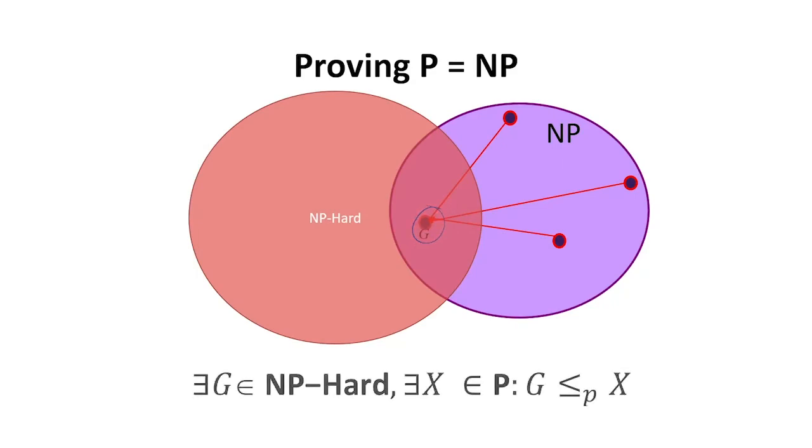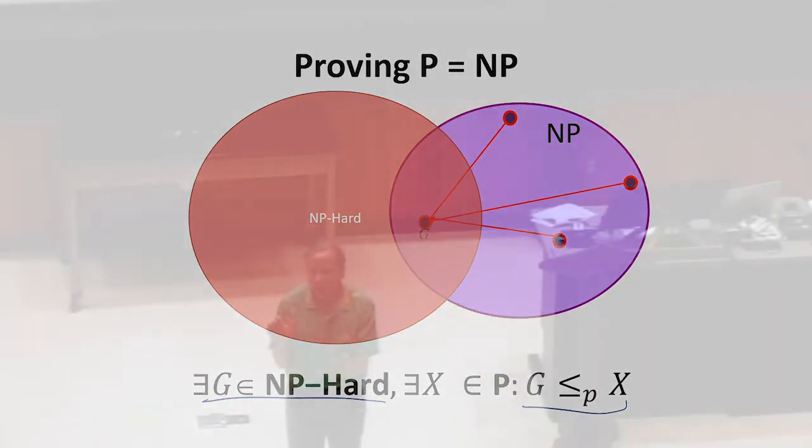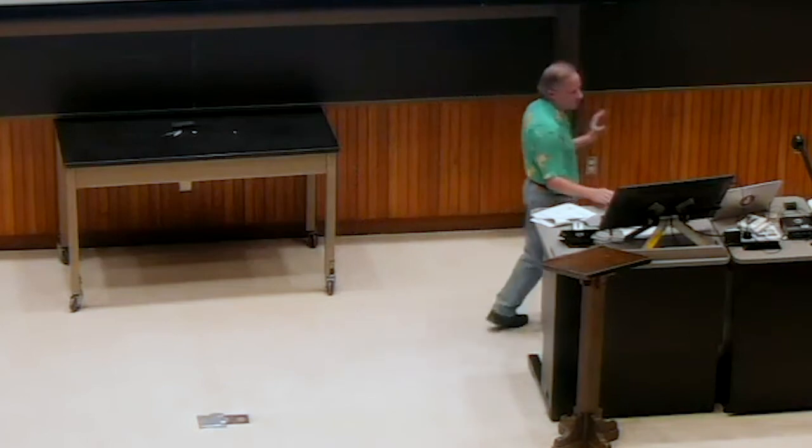So all we've got to do is find one problem that's in NP-hard that can be polynomially time reduced to one problem that's in P. And then we prove they're equal. That sounds easier than it is because no one actually has been able to do that. But that would be a proof if we could do it. There could be other ways.